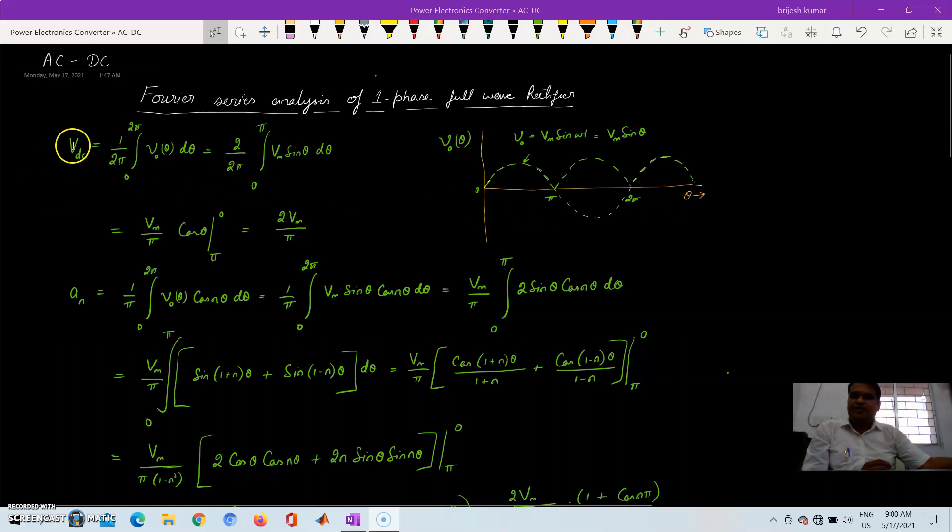So for that we will find first the DC value. So VDC is the average. The formula is 1 by 2π, 0 to 2π, V0 theta d theta. We consider the x axis as theta and the y axis here as the output voltage V0 theta. So VDC it will come out to be 2Vm by π.